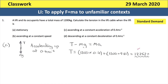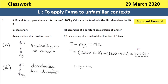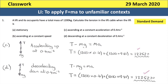Part D: descending while decelerating. Moving downwards but slowing down means the tension again needs to be bigger than the weight in order to slow the elevator down. So T minus mg equals the resultant force, and the mathematics works out exactly the same as part C, giving an answer of 12,252 newtons.